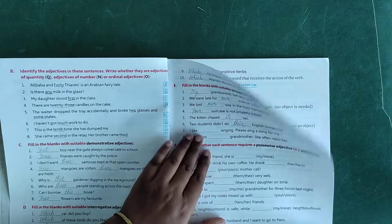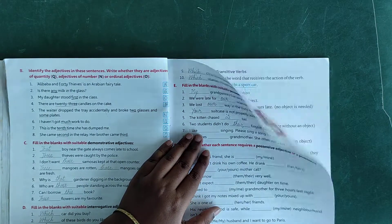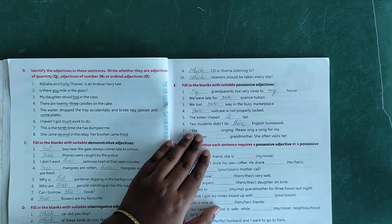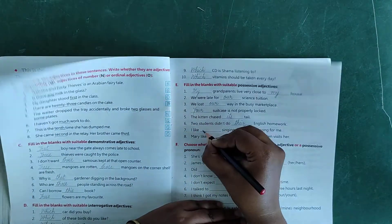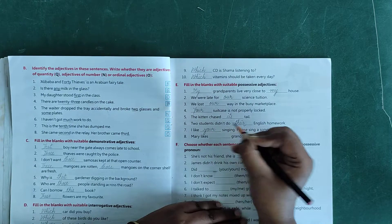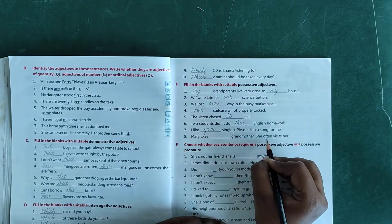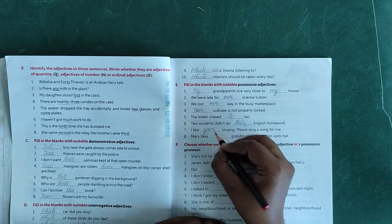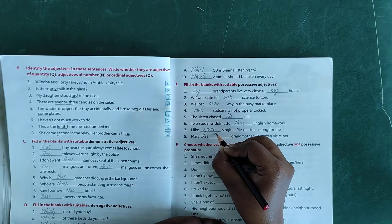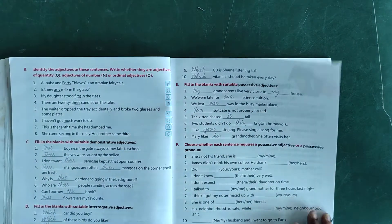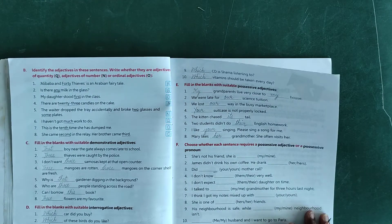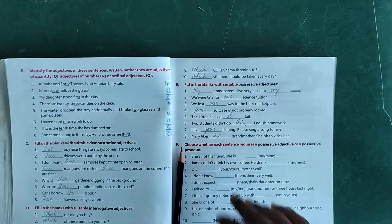Number 7: I like dash singing, please sing the song for me - I like your singing, Y-O-U-R. Number 8: Mary likes dash grandmother, she often visits her - Mary likes her grandmother, H-E-R.